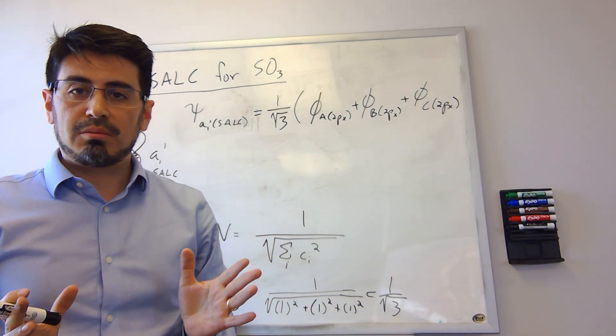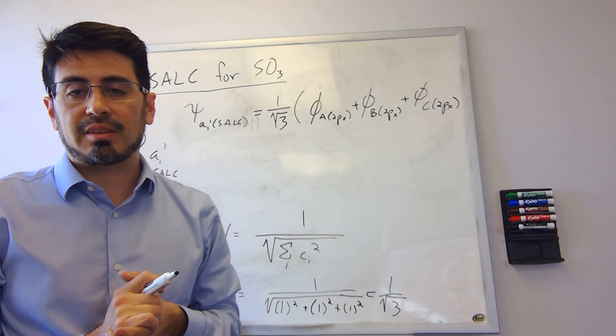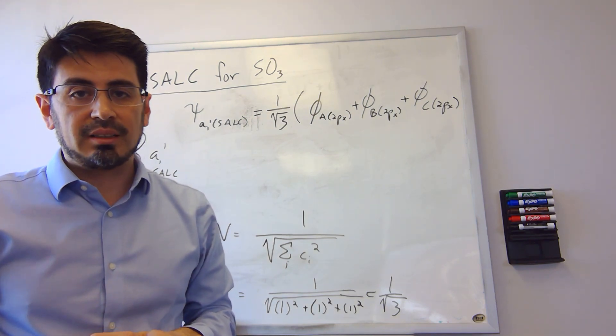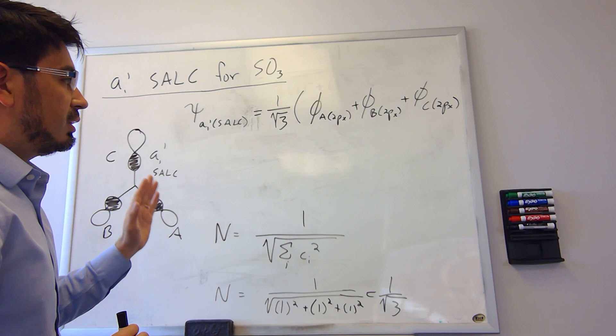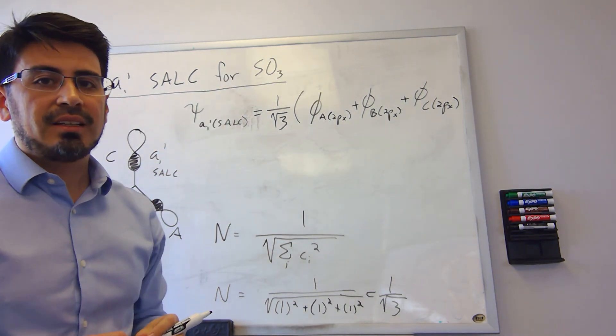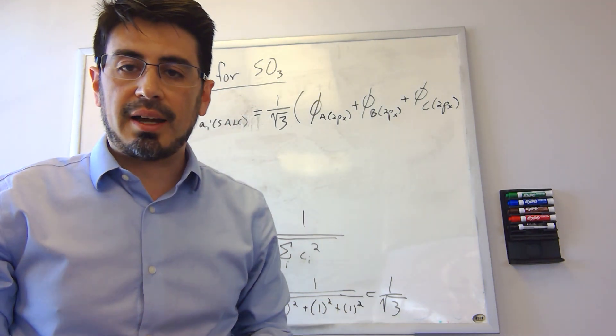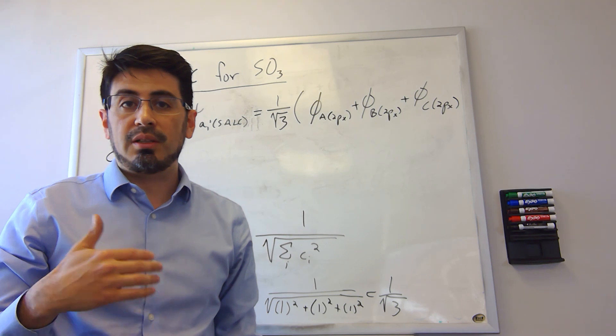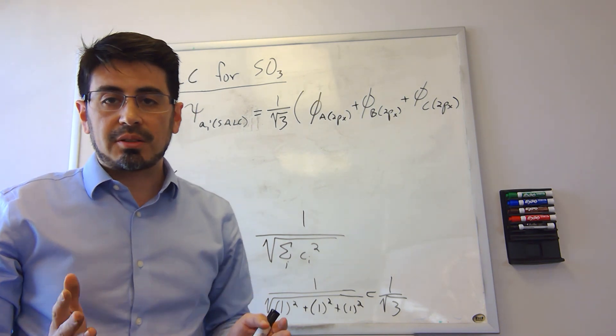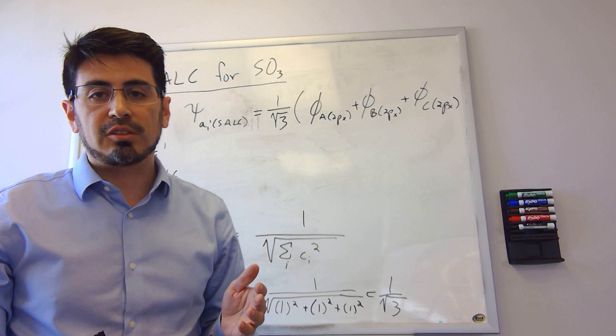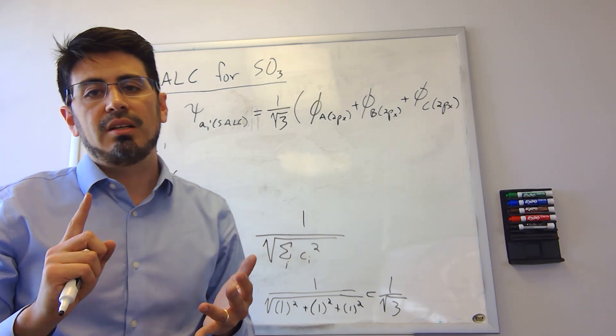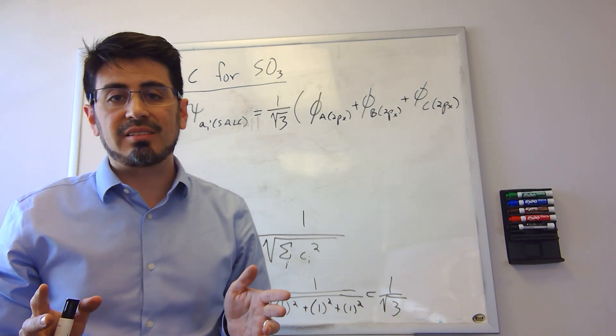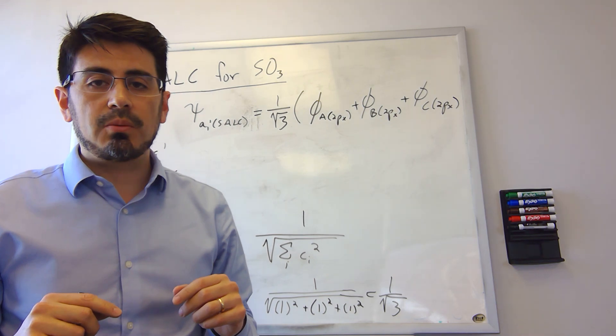Now we want to combine this SALC with the molecular orbital that symmetry matches with the SALCs. So the atomic orbital that we're interested in is the sulfur central atom's atomic orbital. And so in this case, we looked at sulfur, we wrote down all the symmetries that its atomic orbitals correspond to, the 3s, the 3pz, the 3px, and the 3py. And we found that the 3s transforms as the A1 prime symmetry.